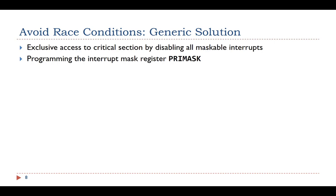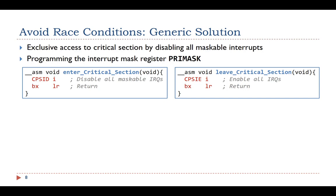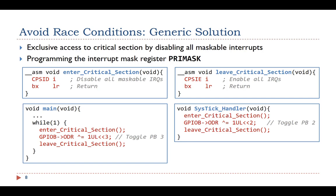Here we give a generic solution which avoids a race condition. We define two functions: enter critical section and leave critical section. Both are inline assembly functions. The first function disables all maskable interrupts. On Cortex-M processors, some interrupts such as bus fault are not maskable. The second function enables all maskable interrupts.